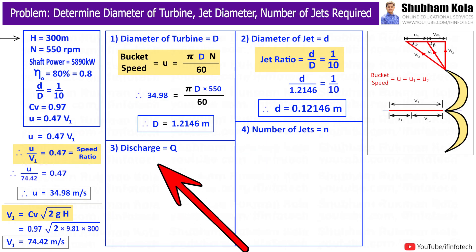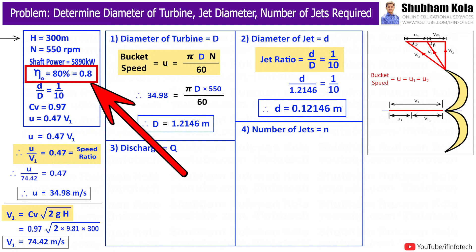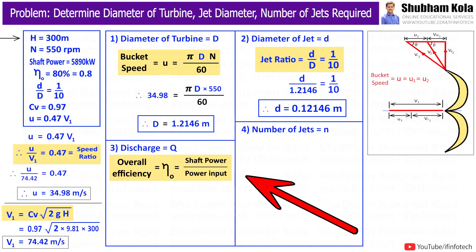Next, we want to calculate discharge, that is Q. In the problem, the value of overall efficiency is given as 80%, that is 0.8. This is overall efficiency, also known as turbine efficiency. Formula for overall efficiency equals shaft power divided by input power, that is ρgQH.